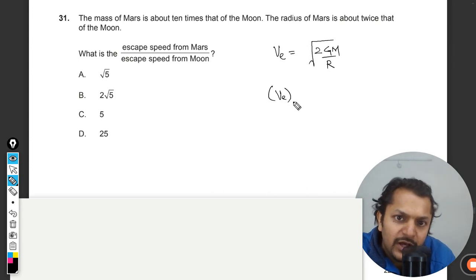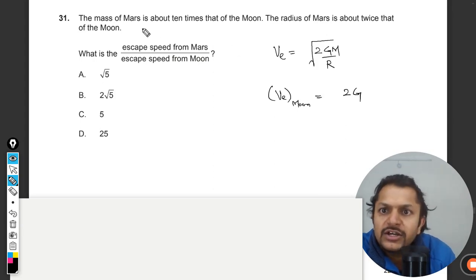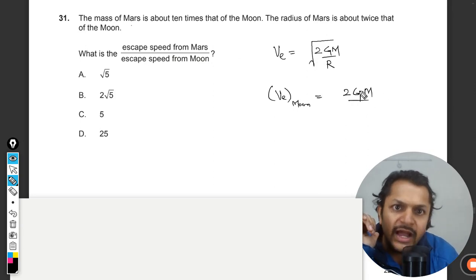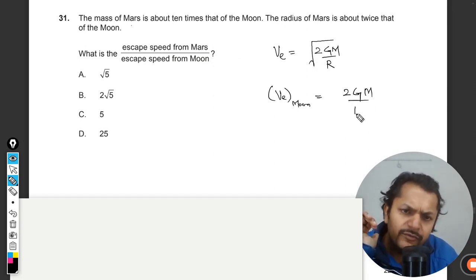The escape velocity for the Moon will be the square root of 2GM/R, where M is the Moon's mass and R is its radius. Since Mars's mass is 10 times that of the Moon, we call it 10M, and Mars's radius is twice, so 2R. The escape speed for Mars is given by this substitution.